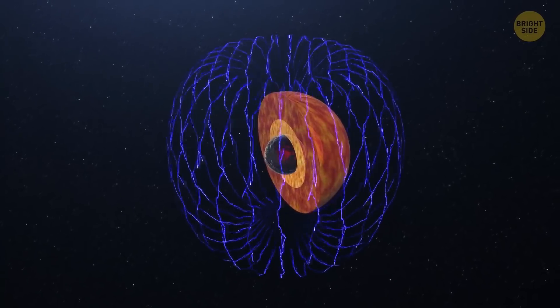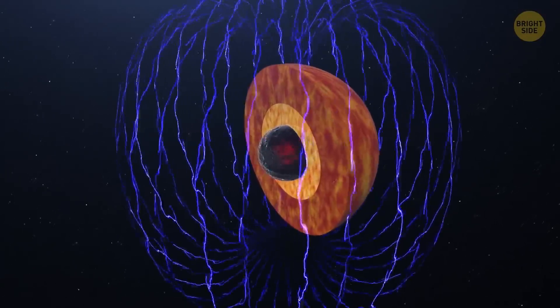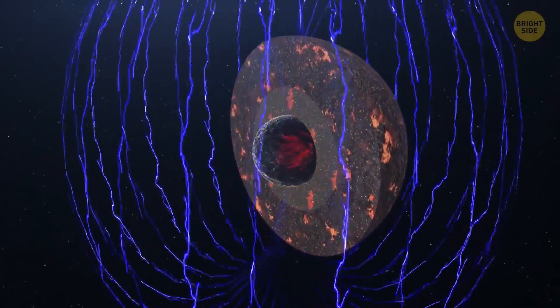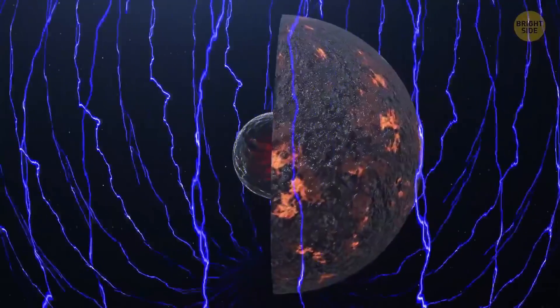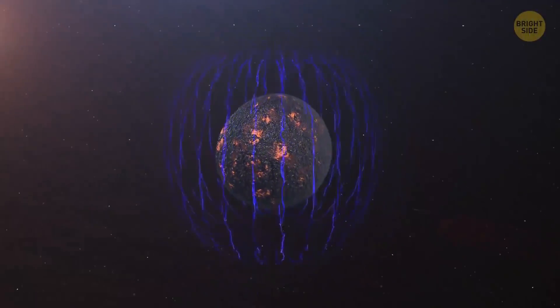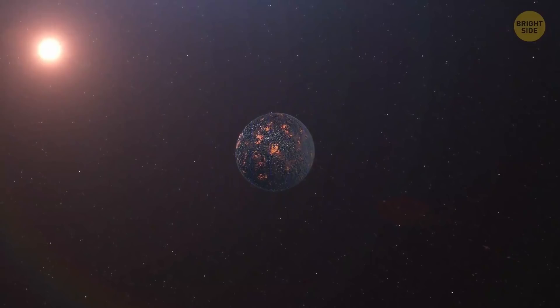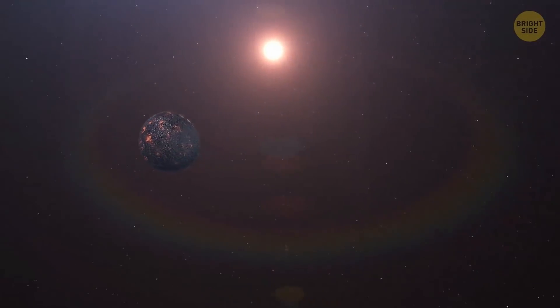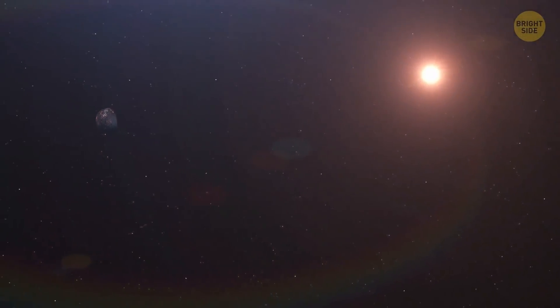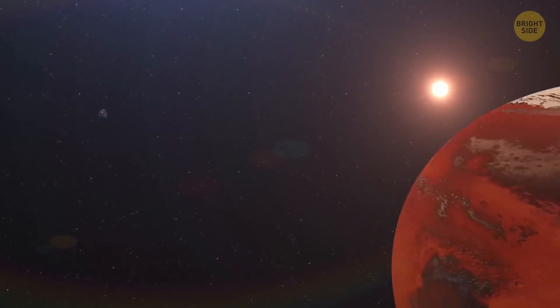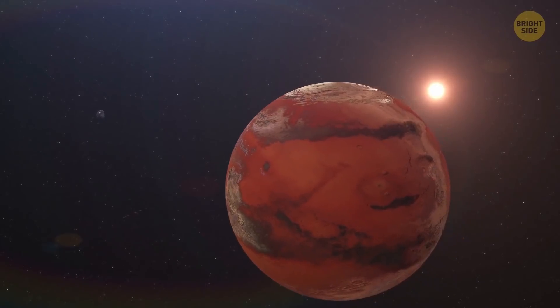Now, let's imagine that both parts of the Earth's core cooled down for some inexplicable reason. In this case, the worst would happen – our planet would simply lose its magnetic field. Uh-oh, but if there's no magnetic field, there's also no atmosphere. That's why, sometime later, the Earth would start to resemble Mars a little bit too much for my liking.